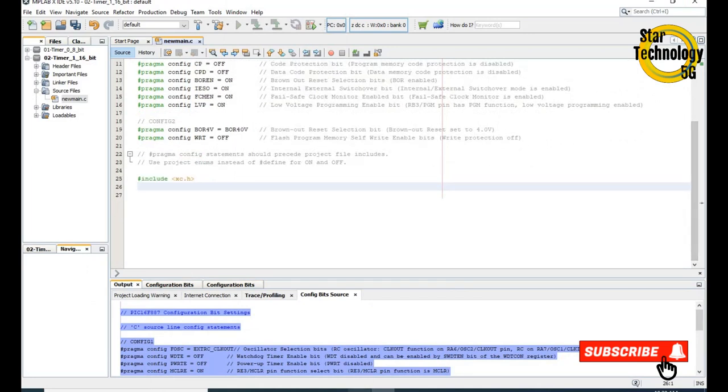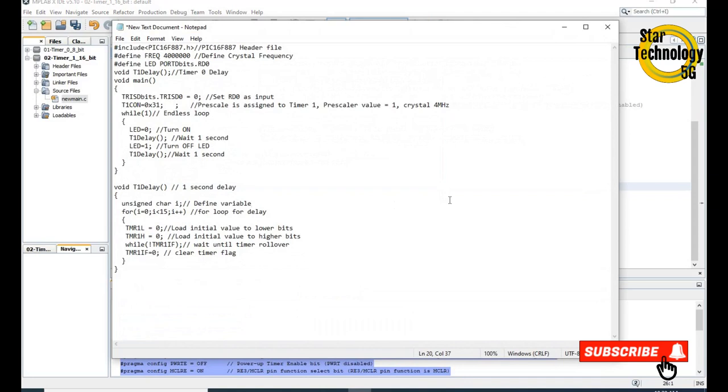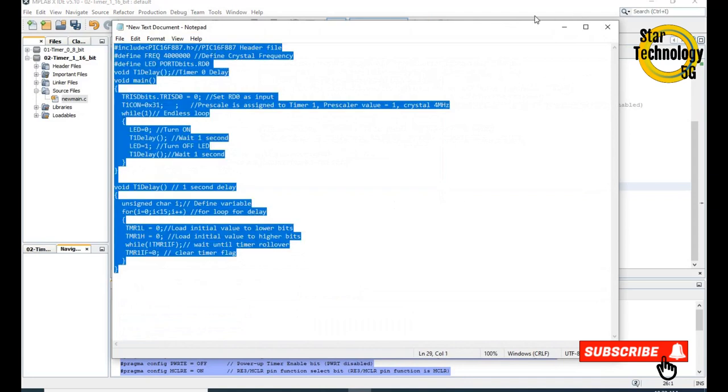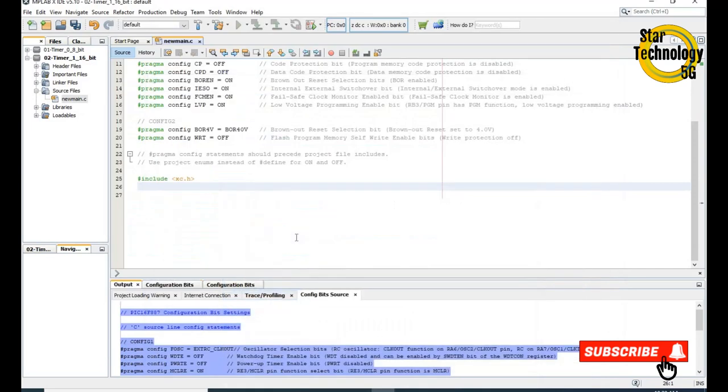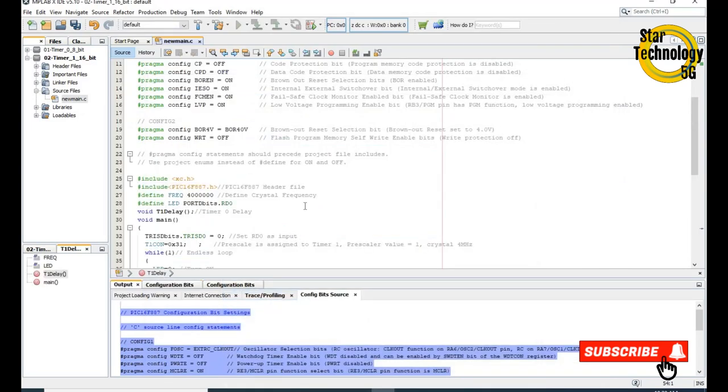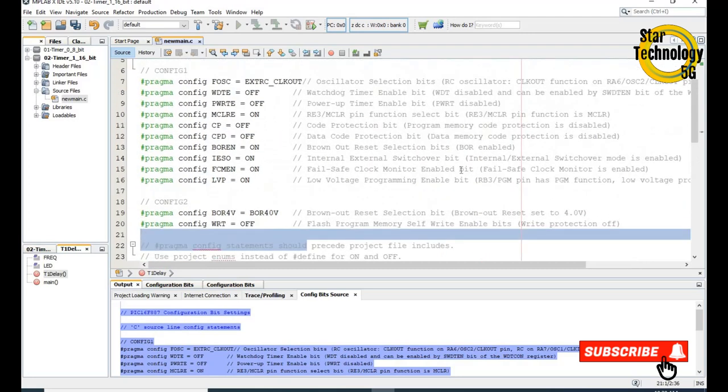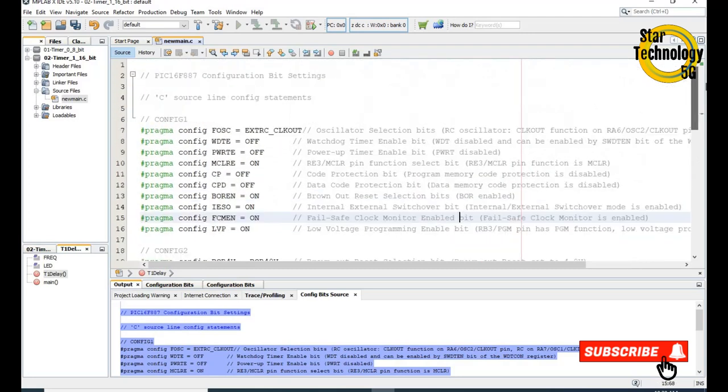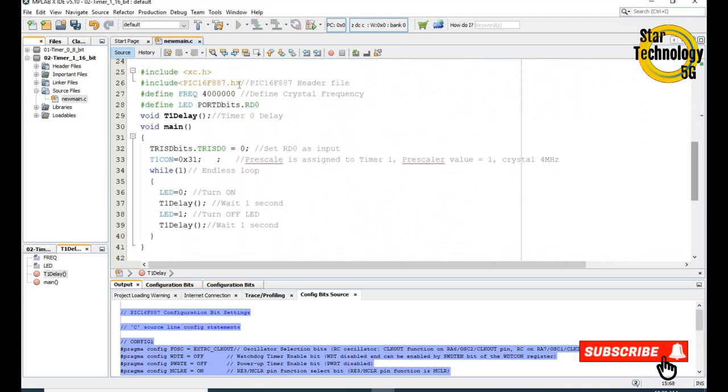Friends, the main file is ready and I already wrote the code. Otherwise the video gets very long. I will copy this code and paste it. I will explain you the code. Here is the PIC16F887 bit configuration. Here is the PIC16F887 header file. Here we define the crystal frequency; we are using 4MHz crystal. We define the LED at RD0 pin, and here is the function for timer1 delay.